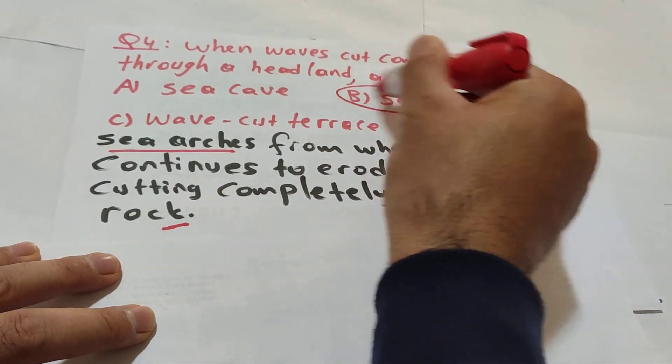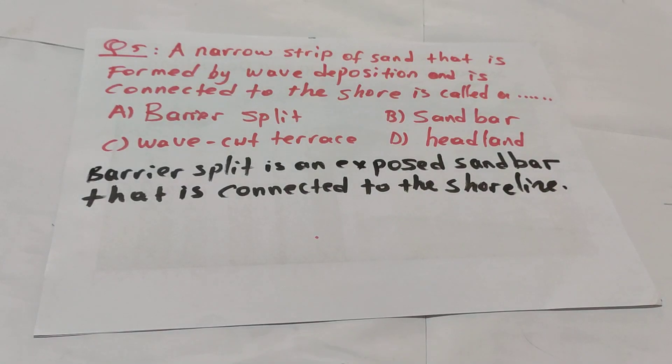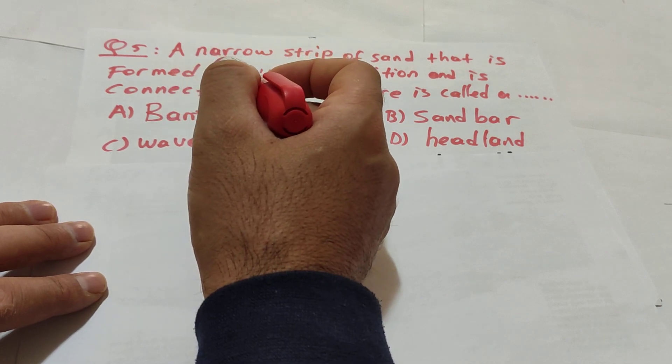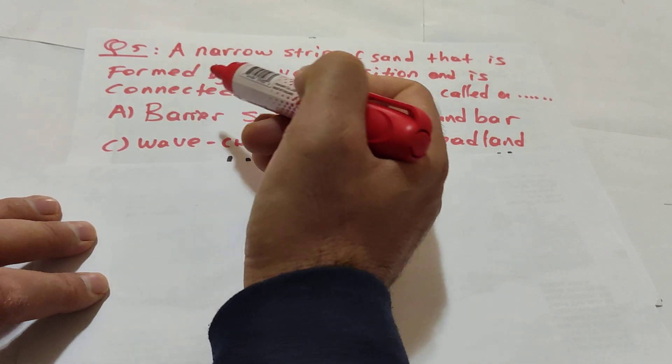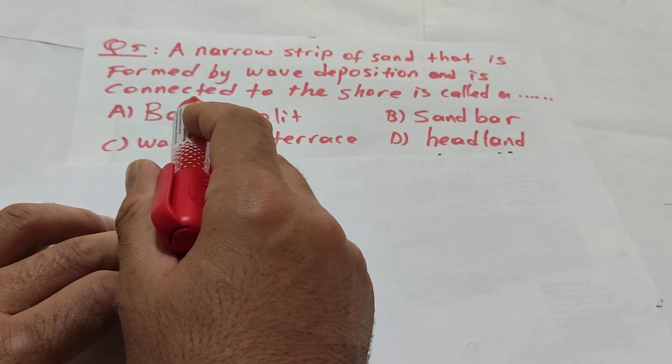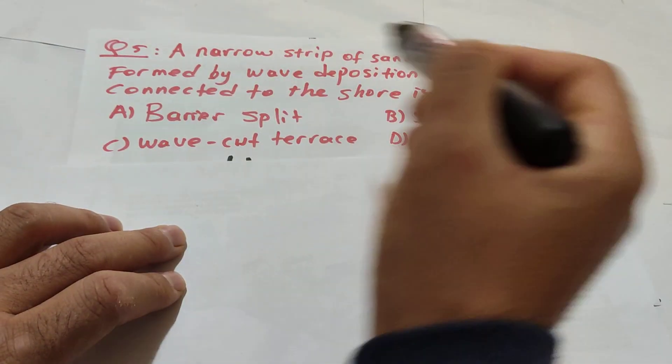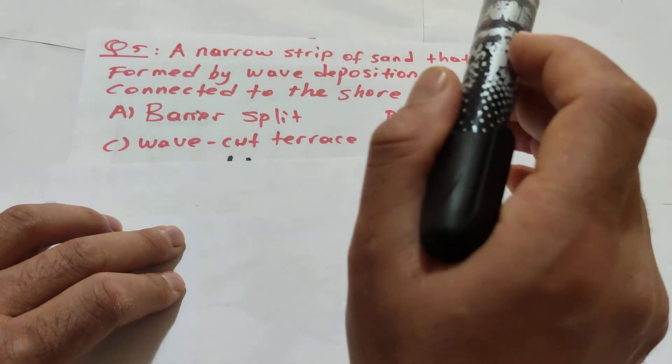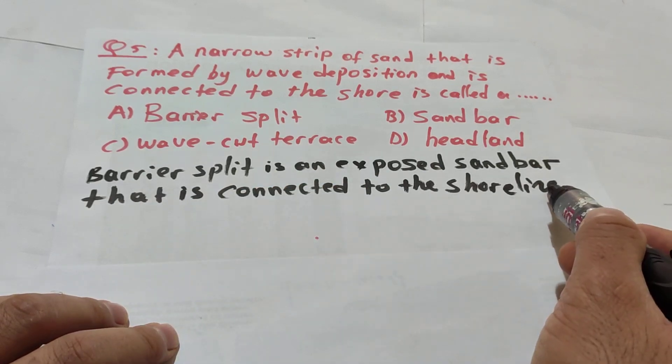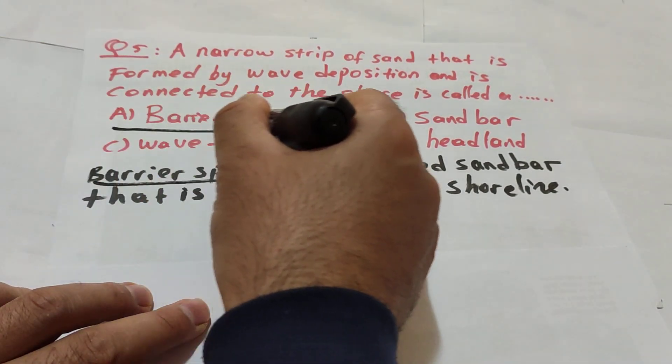Question 5: a narrow strip of sand that is formed by wave deposition and connected to the shore or shoreline is called what? In section two and three. The choices: barrier split, sandbar, wave cut terrace, headland. Barrier split is an exposed sandbar that is connected to shoreline. The answer will be of course barrier split, answer A.